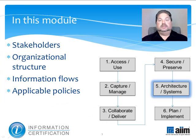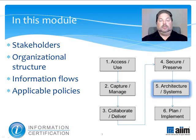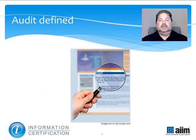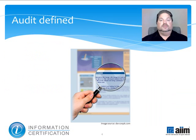In it, we'll discuss what goes into conducting a content and metadata audit, including stakeholders, organizational structure, information flows and applicable policies. A big part of developing or improving an information architecture is understanding the breadth and depth of the organization's existing content and metadata. This helps to determine the size and scope of the effort and is achieved by conducting an audit of the current state.